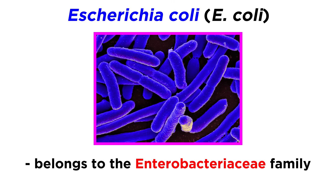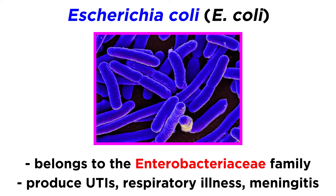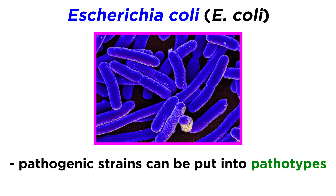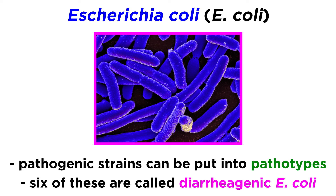E. coli consists of a diverse group of bacteria belonging to the Enterobacteriaceae family, which are associated with diseases ranging from UTIs to respiratory illness to meningitis. Pathogenic strains of E. coli can be categorized into what are called pathotypes. In particular, there are six pathotypes associated with diarrhea, which are appropriately named diarrheogenic E. coli.